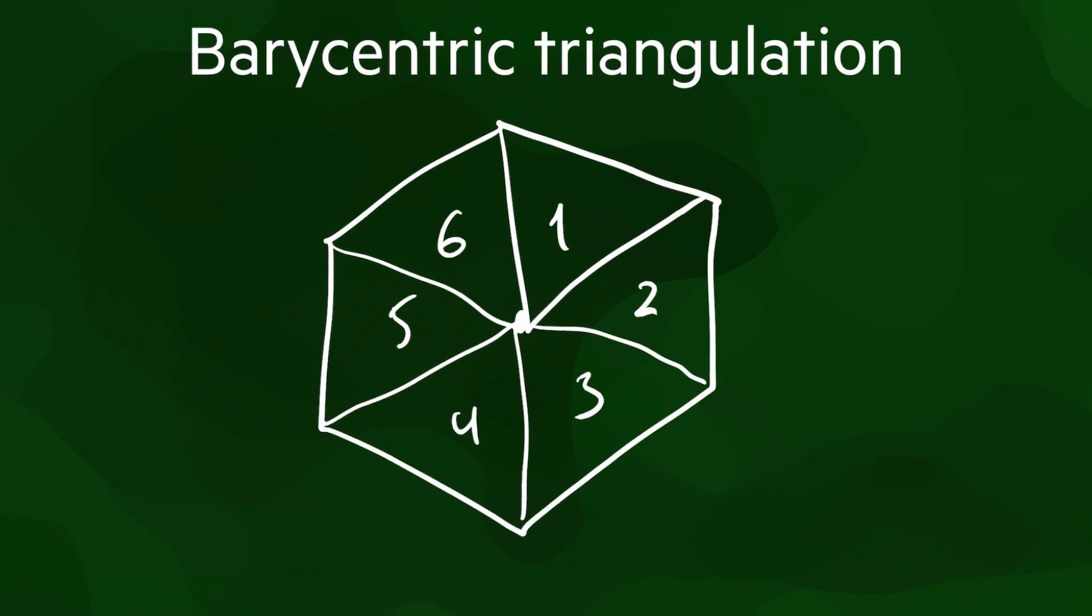But unlike a constrained triangulation, this process doesn't require any geometric operations. Going back to generalized and combinatorial maps, let's show how this works with an example using the three polygons here.